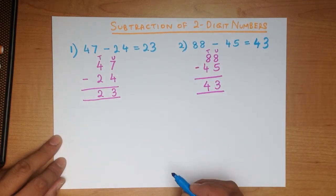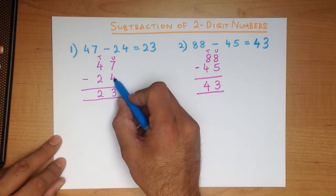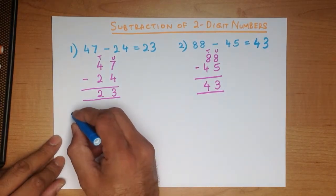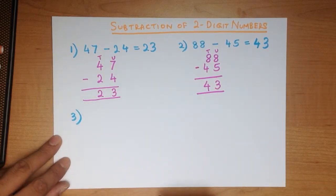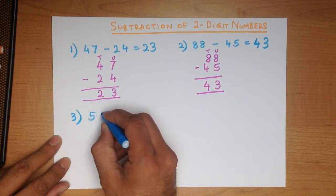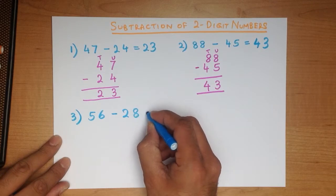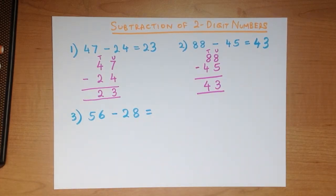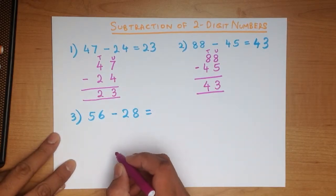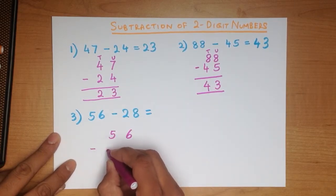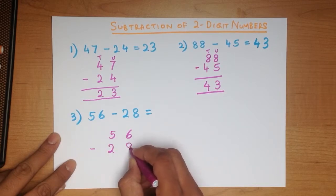But what if this digit is larger than the other one — how do we work it out? Let's go through this. What is 56 minus 28? Let's write this down in the vertical format very slowly and very carefully. 56 minus 28.